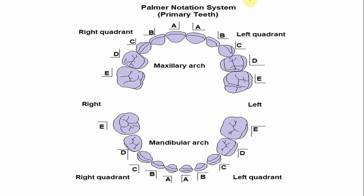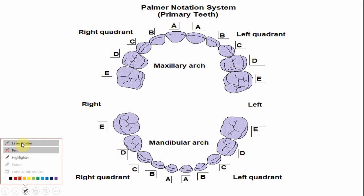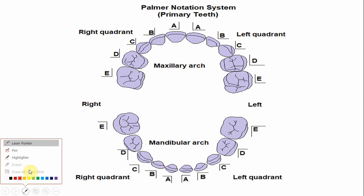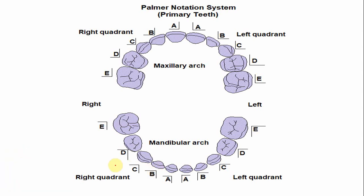In the Palmer notation system, the alphabets are the same for both right and left lateral incisors. This is the lateral incisor of the left side and this is the mandibular lateral incisor of the right side. The alphabet for both is B, but the only difference is the symbol — the symbol indicates whether the tooth belongs to the right or left side of the mandibular arch.